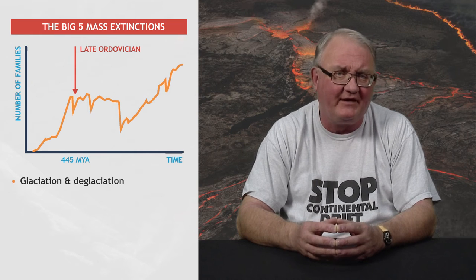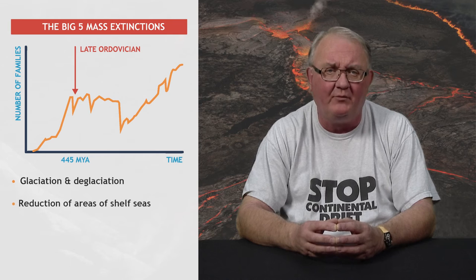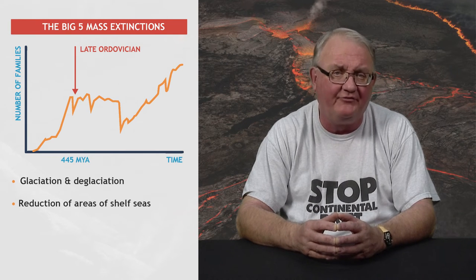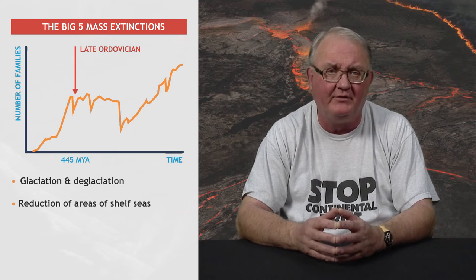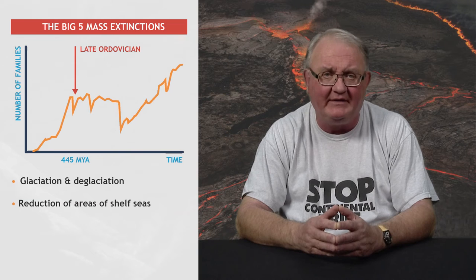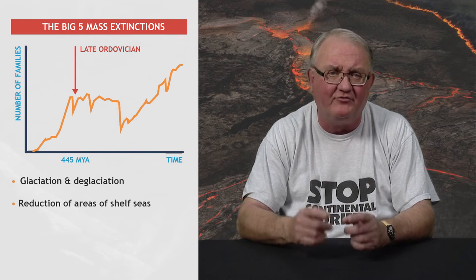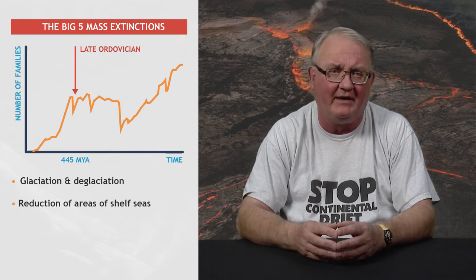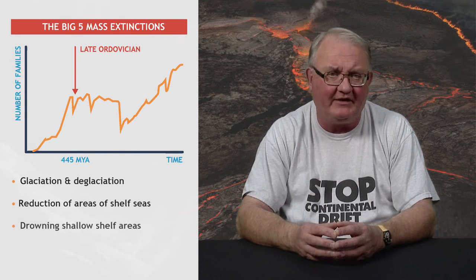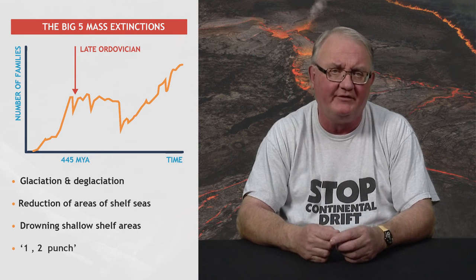The drop in sea level had the effect of greatly reducing the areas of shelf seas where much of the world's biomass was then concentrated, at a time when terrestrial organisms were a minor component of the biosphere. The deglaciation, apart from indicating a warming event, also led to sea levels being elevated to greater than pre-extinction depths, effectively drowning shallow shelf areas. The extinction was delivered as a one-two punch to the marine biota.